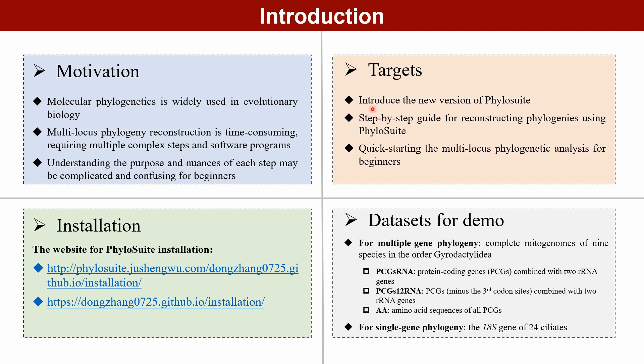The main purposes of the protocol are to provide beginners with a comprehensive understanding of the background of each phylogenetic analysis step, introduce the latest version of PhyloSuite which boasts expanded functionality, and offer a detailed guide for helping novices navigate complex phylogenetic analyses using PhyloSuite, thereby enabling beginners to jump-start their research with confidence. The installation links for PhyloSuite are available below, and the installation tutorial can be found on the official website.